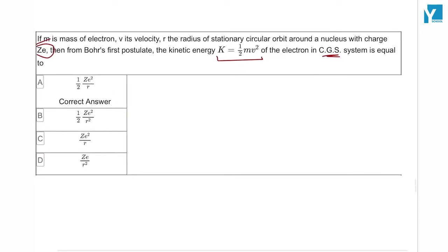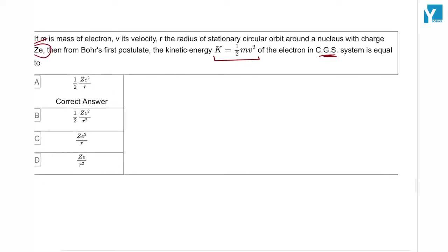Now formula wise you can simply see mv² upon r². The centripetal force mv² by r is equal to the electrostatic attraction. If you have half mv² term, then you have to write half here. This is the kinetic energy formula. What is Ze² by 2?